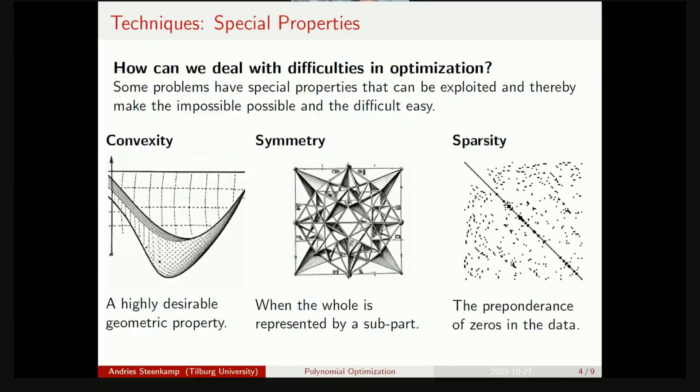En die derde eigenskap is spasiteit. My thesis focus nogals diep op hierdie in deel 1 en 2. So, spasiteit is, as jy een groot hoeveelheid van nul waardes het in jou data, so jou data is essentieel baie leeg.